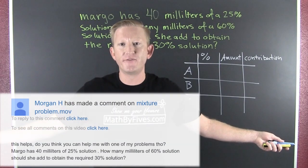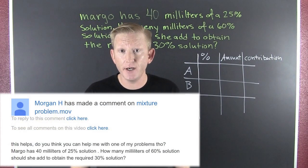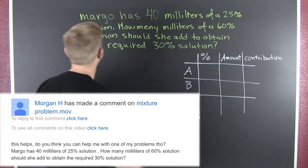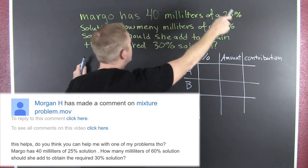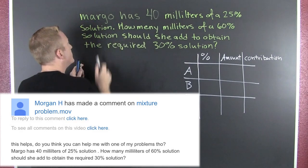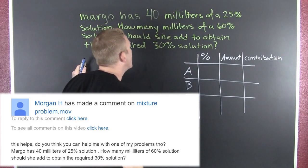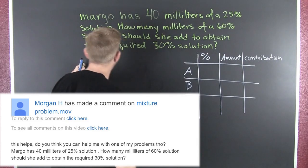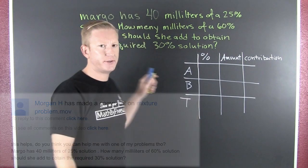This week's math question comes from Morgan H. She hit me up on YouTube. She wants to know: Margo has 40 milliliters of a 25% solution. How many milliliters of a 60% solution should she add to obtain the required 30% solution?